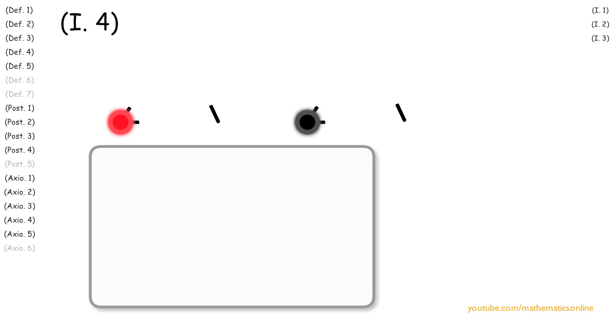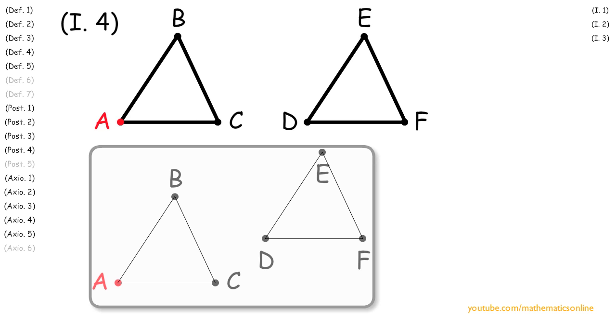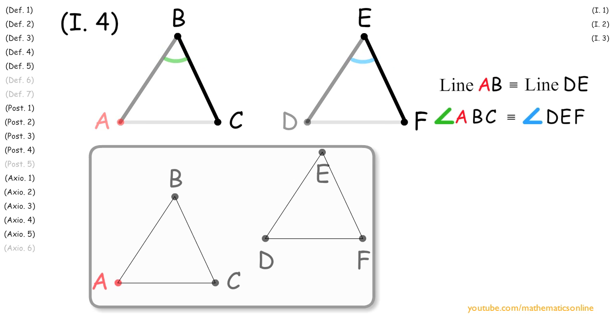So to begin Proposition 4, we are given triangles ABC and DEF. We are also given that line AB is congruent to line DE, angle ABC is congruent to angle DEF, and line BC is congruent to line EF.